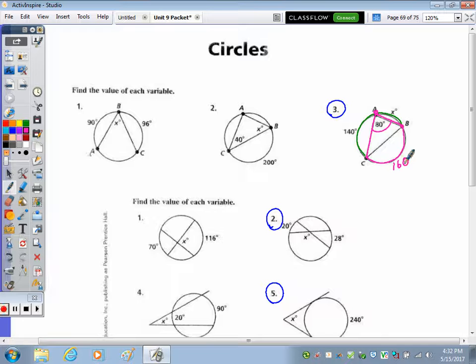So double 80 and you get 160. So now x plus the 140 plus the 160 equals 360. 140 and 160, combine those like terms, 40 and 60 is 100, so plus 300. Subtract the 300 from 360, and we get x is 60 degrees.